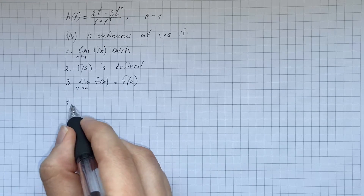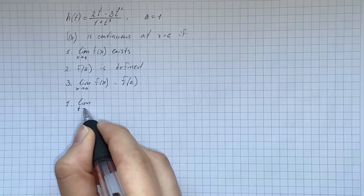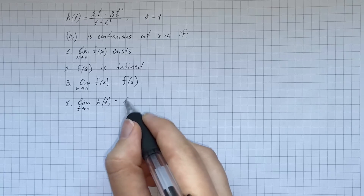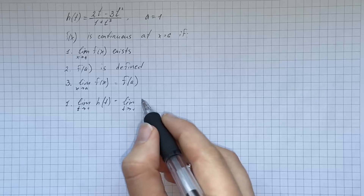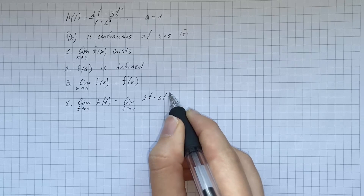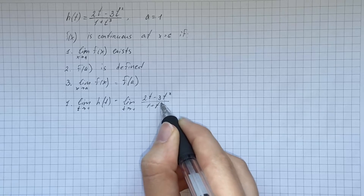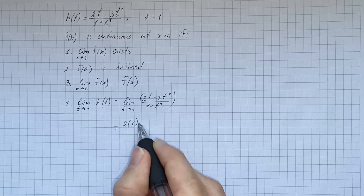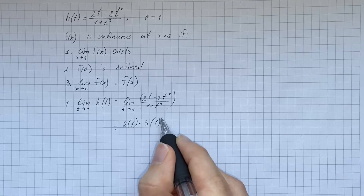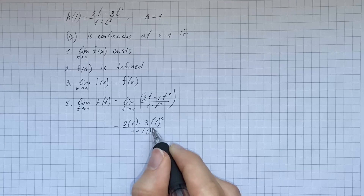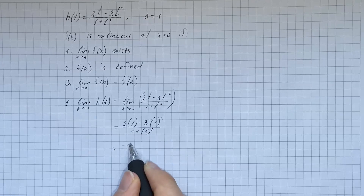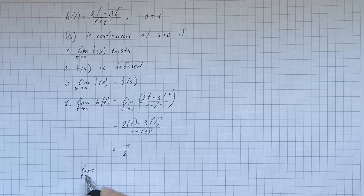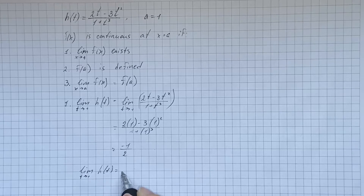First, we're going to find the limit as t approaches one of our function h of t. That's going to be the limit as t tends to one of (2t minus 3t squared) over (1 plus t cubed). Using direct substitution, we get (2 times 1 minus 3 times 1 squared) over (1 plus 1 cubed), which gives us negative one over two. Therefore, the limit as t approaches one of h of t equals negative one-half.